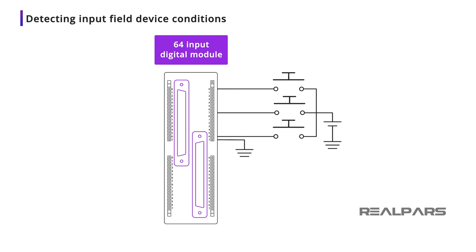Every input device is connected the same way. If you have a 64 input module, it's possible to have 64 separate circuits. We'll show you more examples later.